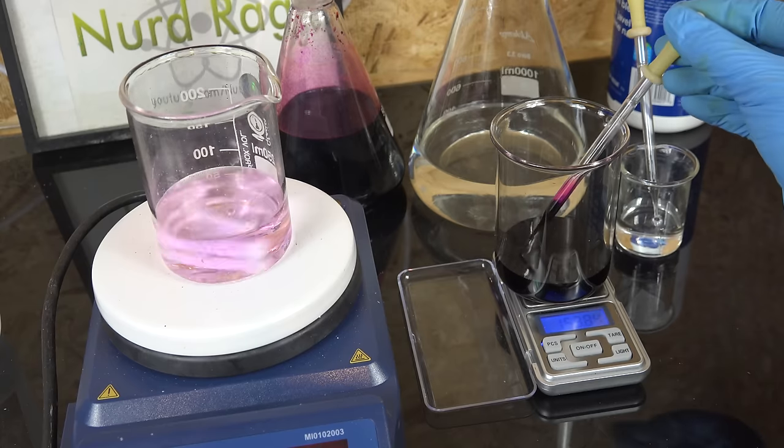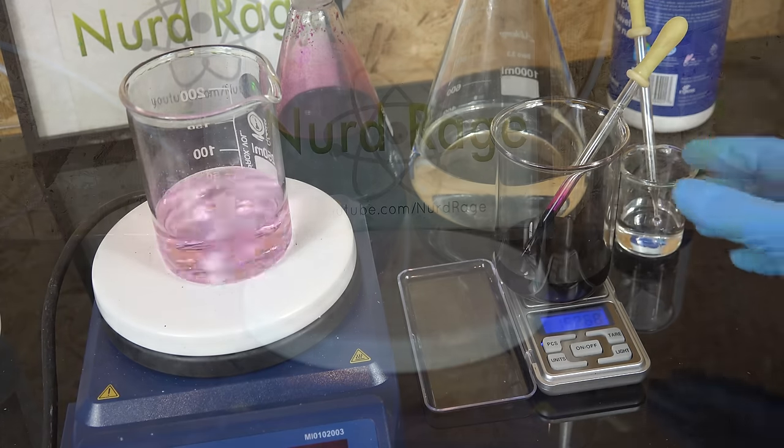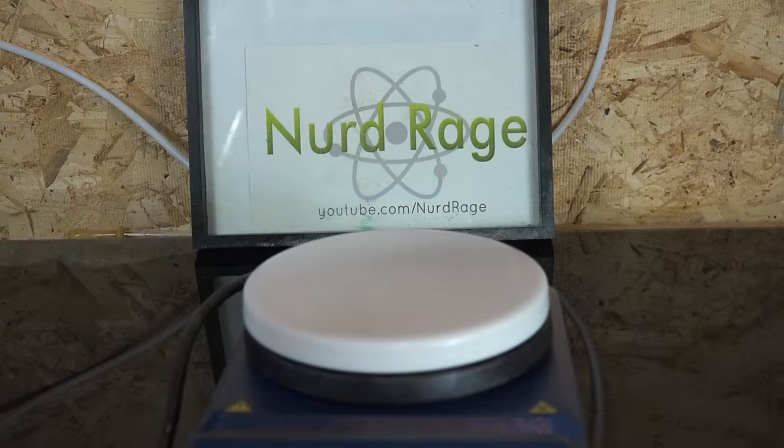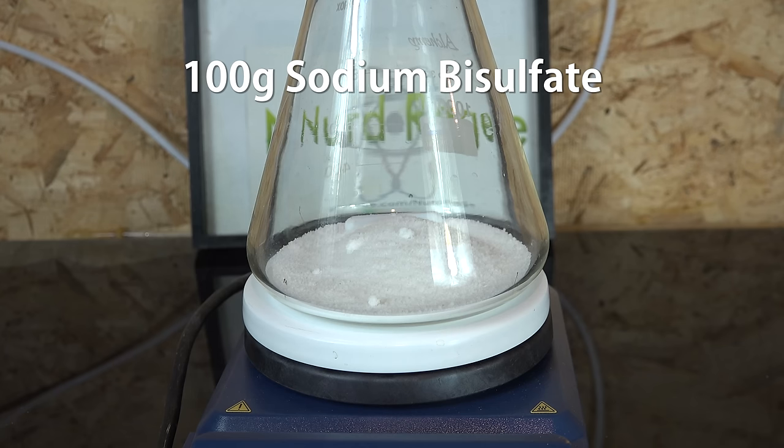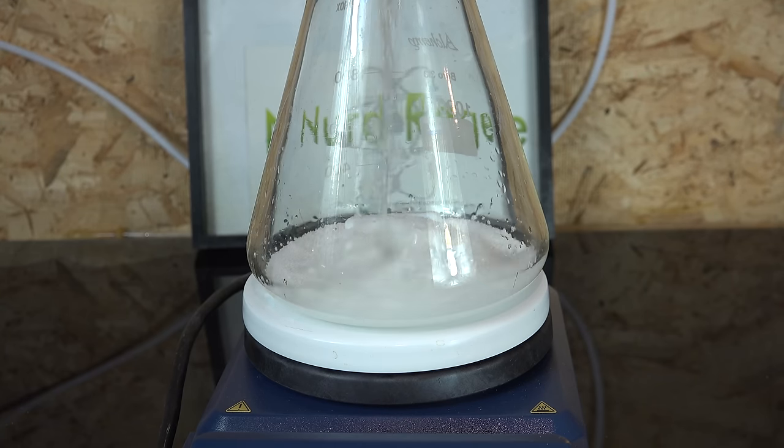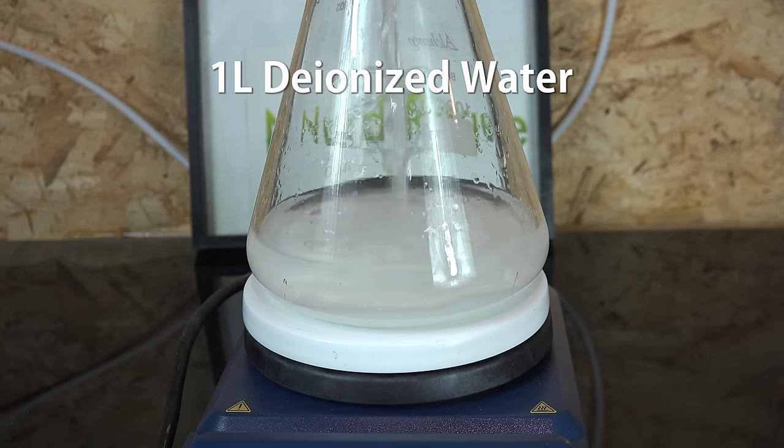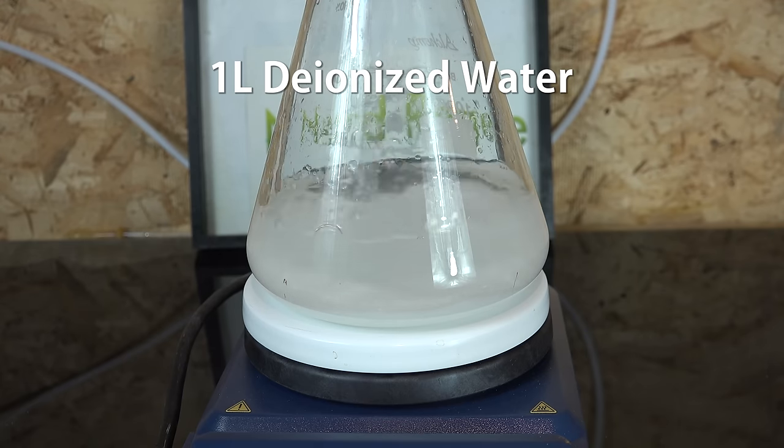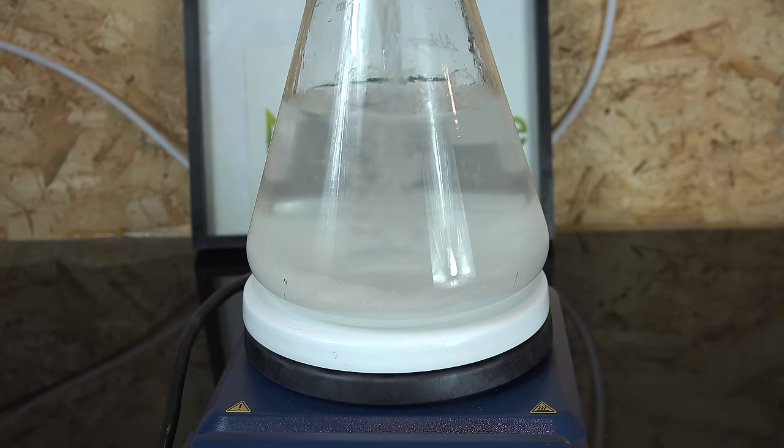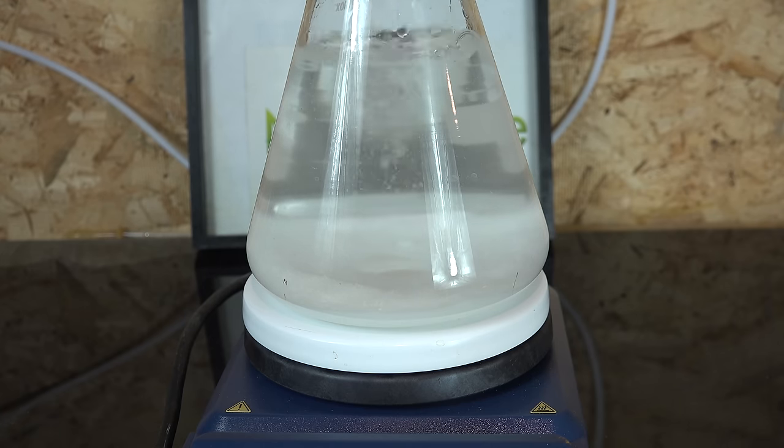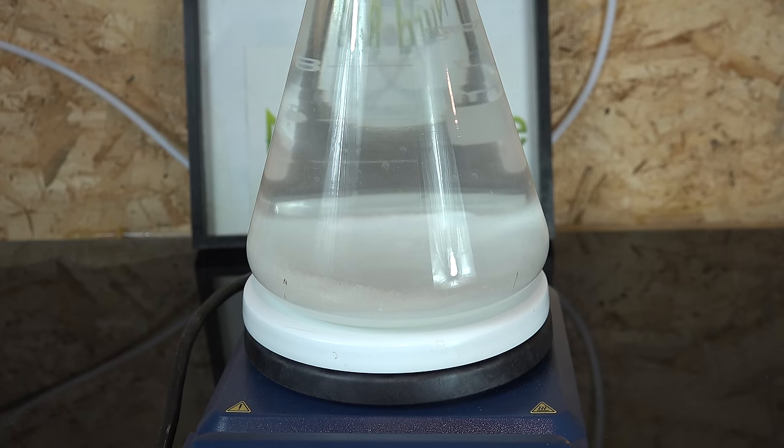So let's make our reagents. First we'll prepare our supporting titration mixture. We weigh out 100g of sodium bisulfate which is a pH lowering chemical for swimming pools, and to this we add 1 liter of deionized water and stir until dissolved. I know it's a lot but we'll need a good stock since we'll be doing multiple trials.